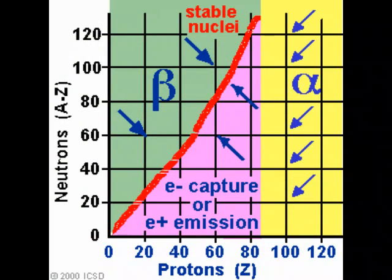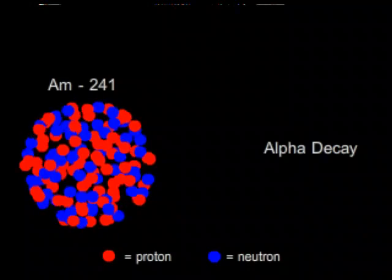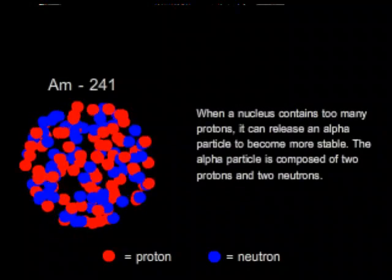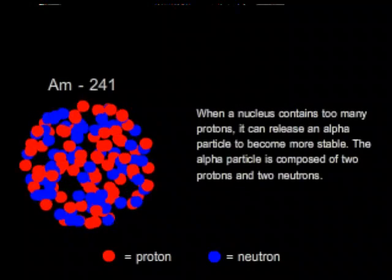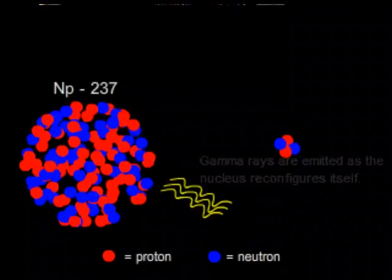In this graph you can see how atoms will lose neutrons, protons, or both in order to become stable isotopes. In alpha decay, a nucleus with more than 83 protons sheds two protons and two neutrons to make a smaller atom. Gamma rays are always emitted as the nucleus is restructured.